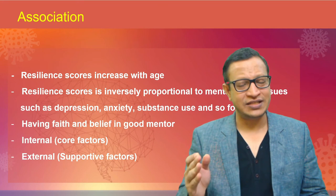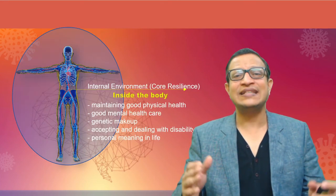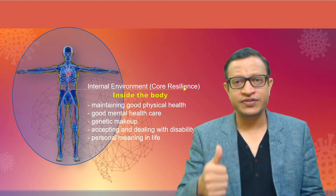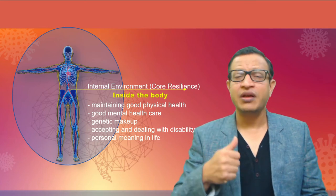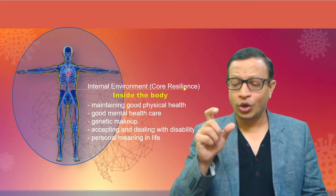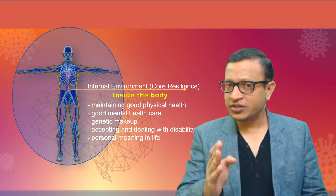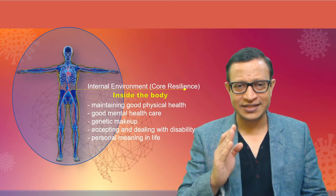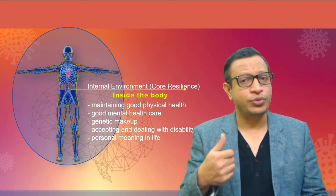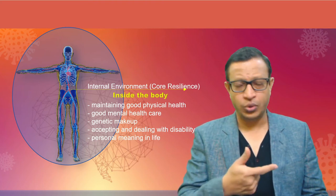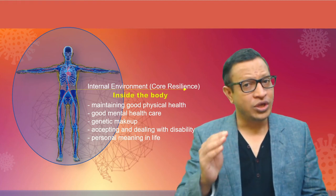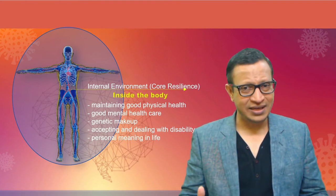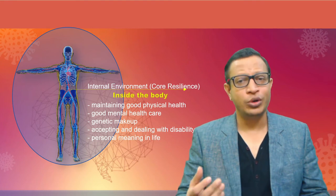Another category is supportive resilience factors — external factors. The internal environment refers to the human body: maintaining good physical health, genetic makeup, family history of diabetes, hypertension, depression, or mental illness means your core genetic component may already be vulnerable. In the face of adversity, there is a possibility of decompensating. You must make attempts to improve your physical and mental health — doing exercise, yoga, relaxation, knowing your strengths and weaknesses, and understanding your genetic makeup and family history.